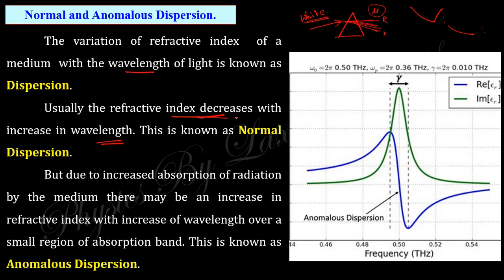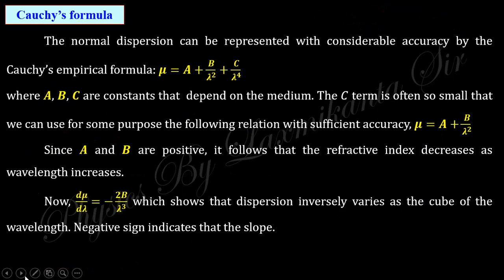Equivalently, in normal dispersion, the refractive index increases with increasing frequency. In anomalous dispersion, the opposite occurs — the refractive index decreases with increasing frequency, or increases with increasing wavelength. These two types of dispersion can be explained by Cauchy's relation and the Sellmeier formula respectively.